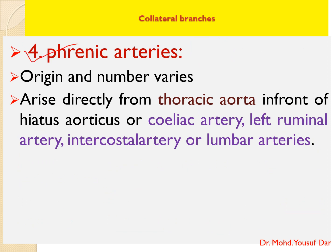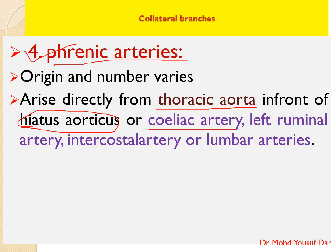The last collateral branch is the phrenic artery. Its number and origin vary. When single, it arises directly from the thoracic aorta in front of the hiatus aorticus. When multiple, the phrenic arteries may arise from the celiac artery, left renal artery, intercostal artery, or lumbar artery.